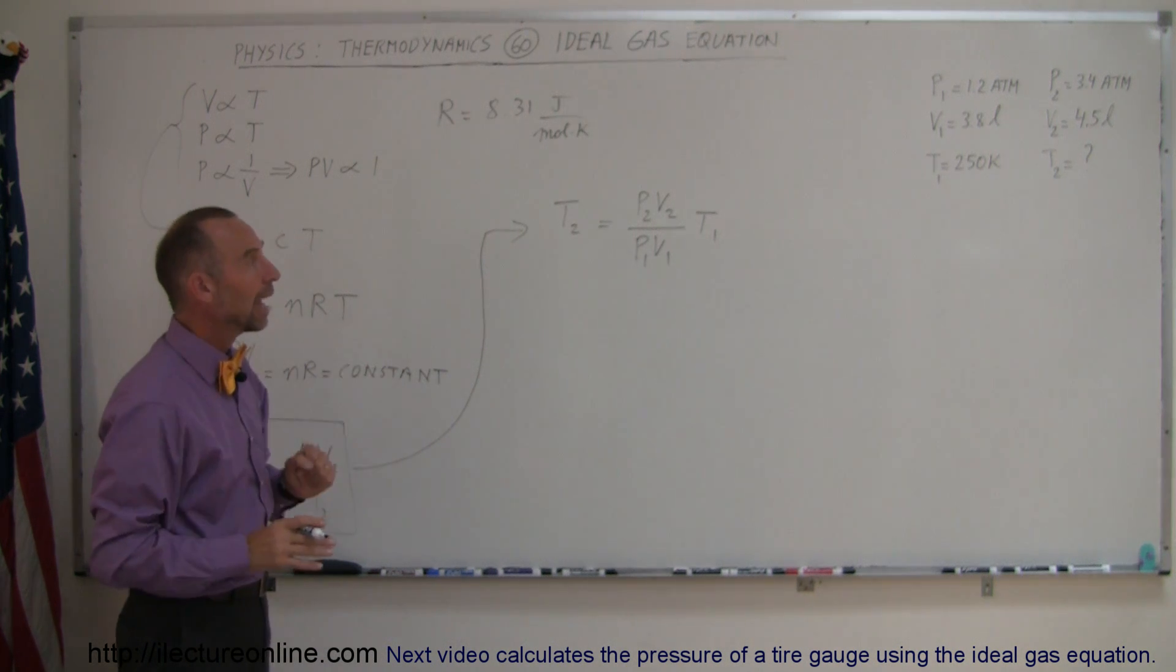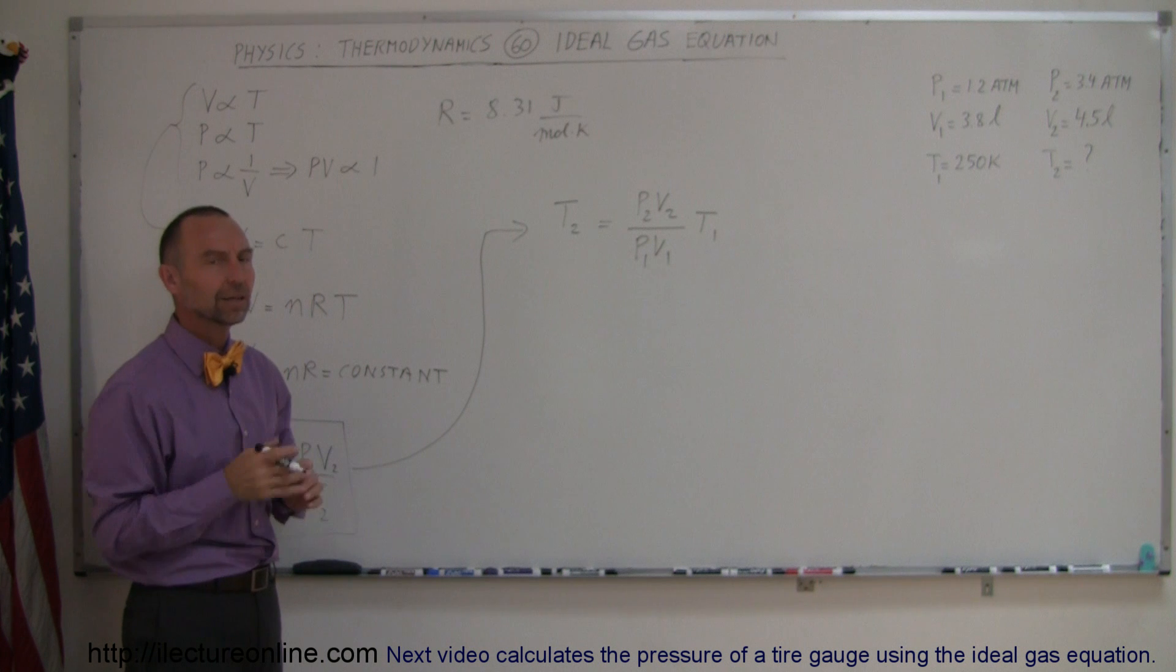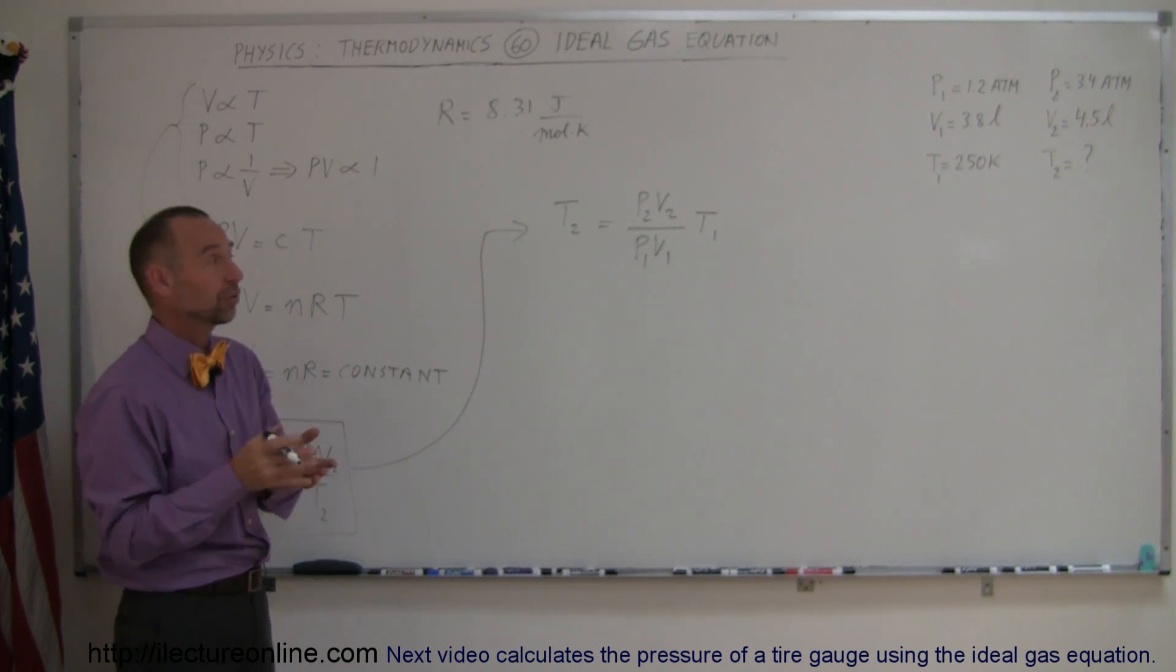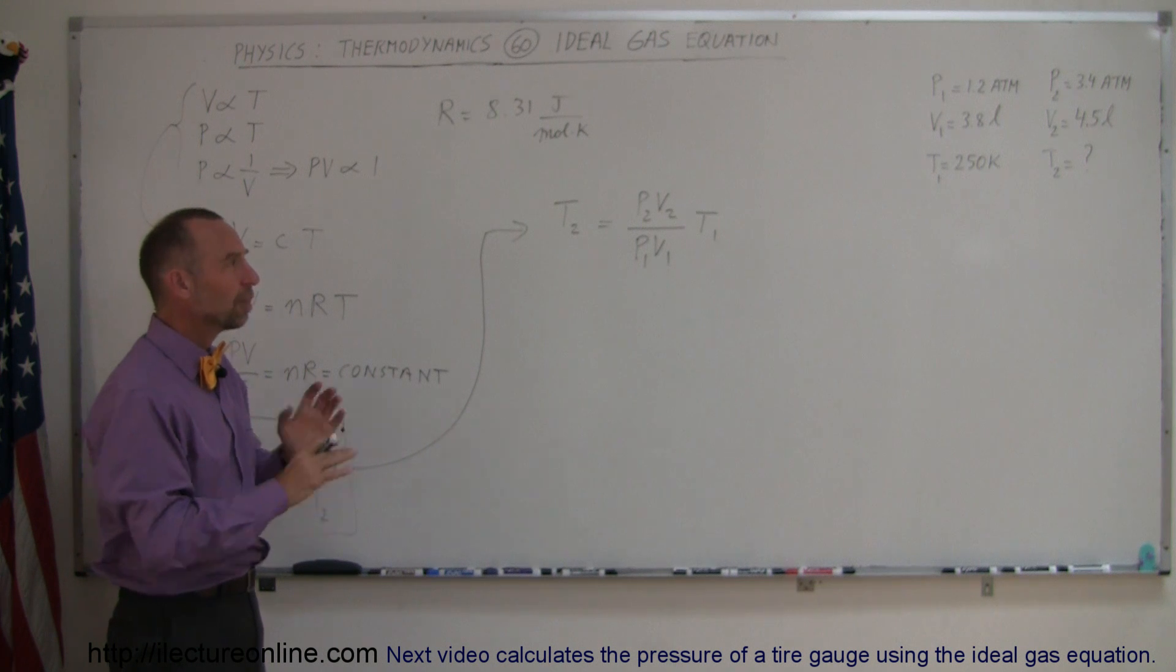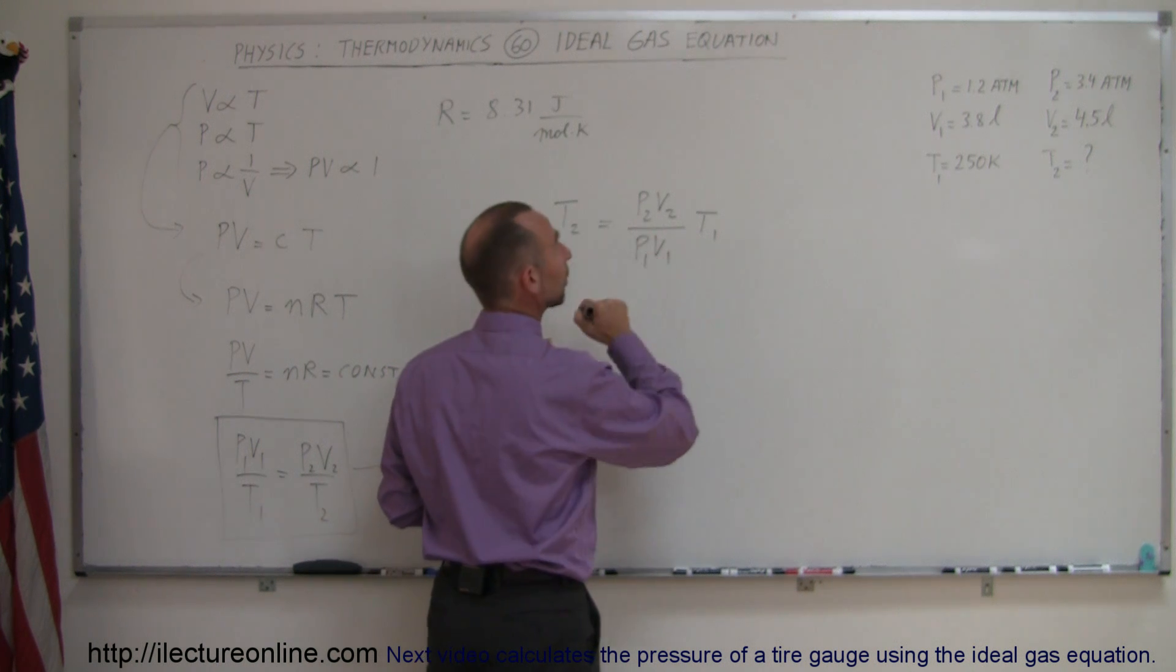Now we plug in all the values that we have, and notice that typically you wouldn't mix atmospheres and liters and Kelvin together. You want to transfer from atmospheres to Pascals, from liters to cubic meters. But since we have it in this form of the equation, you really don't need to do that. You can just leave it as is.